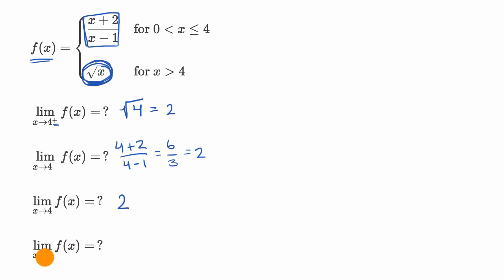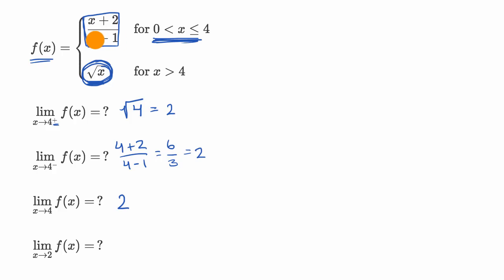Now what's the limit as x approaches two of f of x? As x approaches two, we are going to be completely in this scenario. Interesting things do happen at x equals one where the denominator goes to zero, but at x equals two this part of the curve is going to be continuous, so we can just substitute the value. It's going to be two plus two over two minus one, which is four over one, which is equal to four.